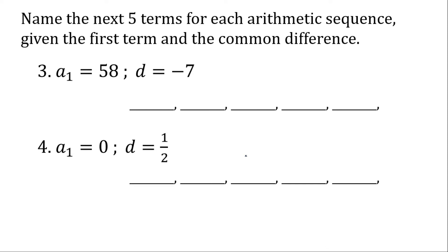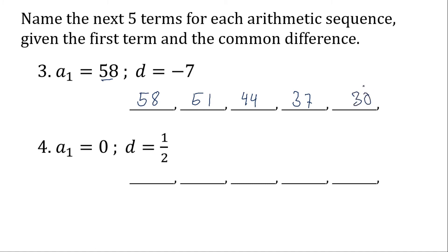For number three, same process. Just write the first term first: fifty-eight. Then add negative seven. Fifty-eight plus negative seven is fifty-one. Fifty-one plus negative seven is forty-four. Forty-four plus negative seven is thirty-seven. Then thirty-seven plus negative seven is thirty. So this is the answer for number three.